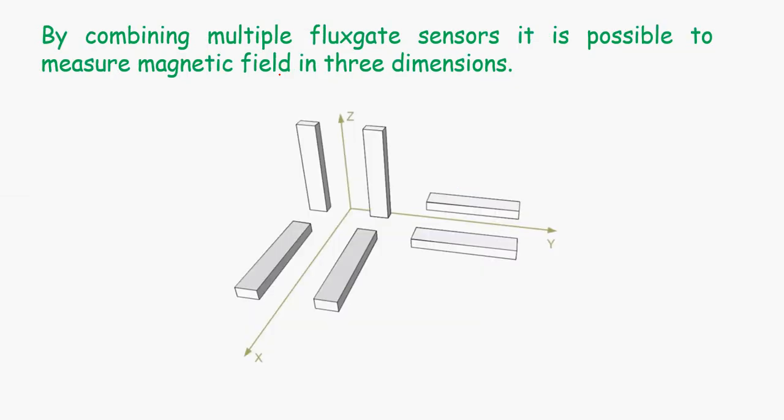If we want to measure different dimensions, we can easily set up multiple fluxgate sensors. We can place two maybe in the z dimension, another one in the x dimension, and another one in the y dimension. We can easily measure all the components of the Earth's magnetic field - the horizontal components x and y, the vertical component z - or we can use the same fluxgate by orienting it in different positions.